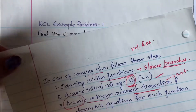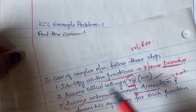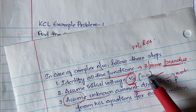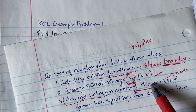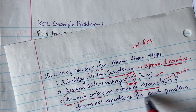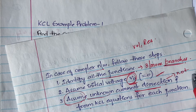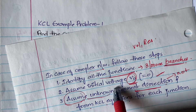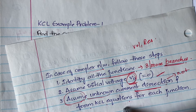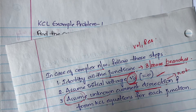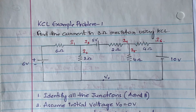First step: identify all the junctions. Next, assume the initial voltage V₀ which is equal to zero. Then assume the unknown current directions and form KCL equations. If the direction of current is not given in the circuit diagram, you have to assume it yourself. It is always better to assume all unknown currents in one direction only so there will be no confusion.